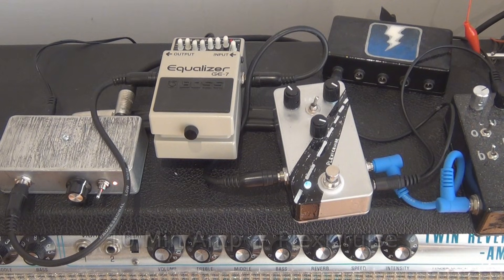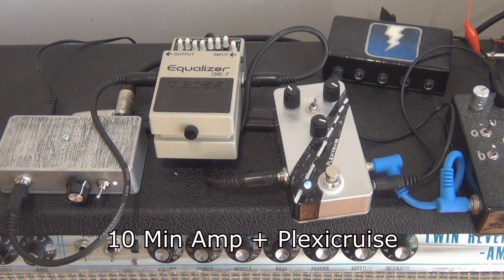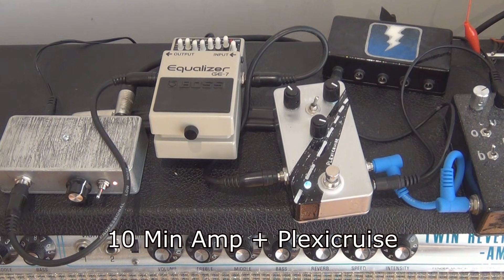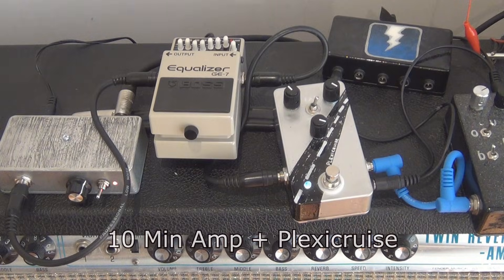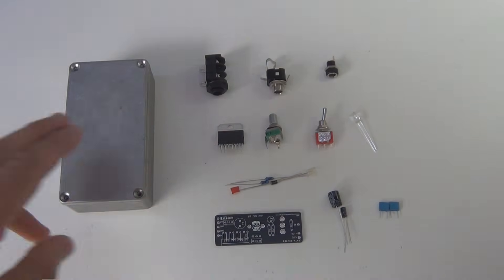So there's two build options for the 10 minute amp: there's the PCB on its own, or there's the PCB with all the components included. The only other thing you'll need will be a metal enclosure, needs to be metal so that you can ground it.